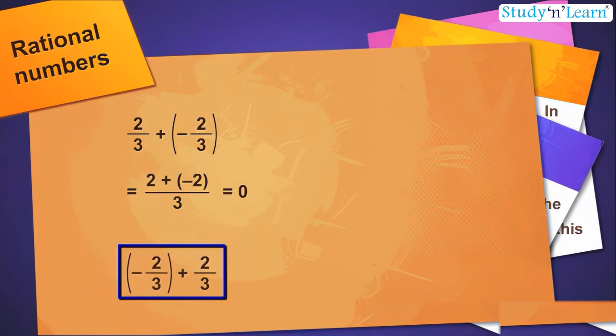Also, minus 2 by 3 plus 2 by 3 is equal to 0. So negative of 2 by 3 is minus 2 by 3 and negative of minus 2 by 3 is 2 by 3.